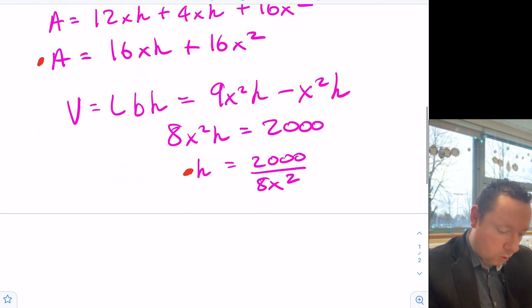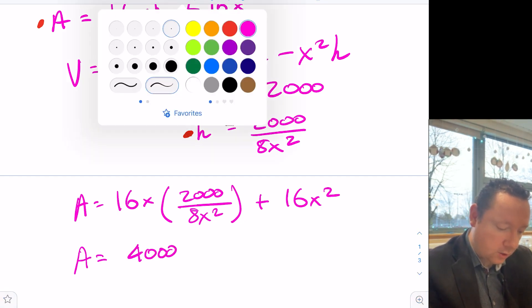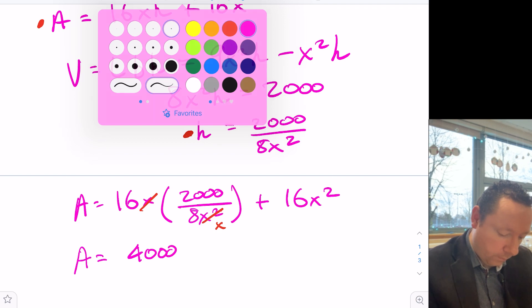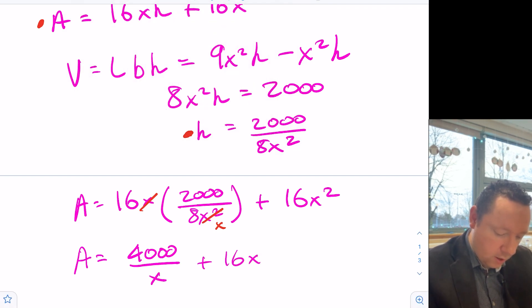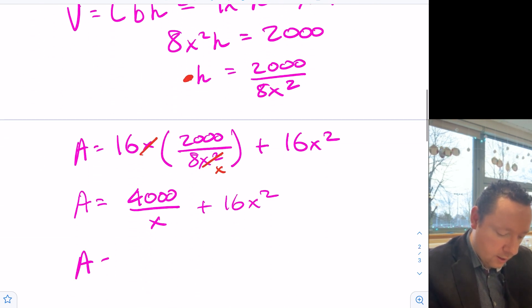Now we just need to substitute it into A. So our A is 16x times h, 2,000 over 8x squared, and we've got still plus 16x squared. Using a calculator, 16 times 2,000 divided by 8 is 4,000. So we get 4,000 on the top. And we've got cancellation to do. X on the top. So x squared becomes x. So we get x on the bottom. Plus 16x squared. Or writing it in exactly the same way we wanted, 16x squared plus 4,000 over x, which is just exactly the same as what I've just already got. And there's your third and final mark.